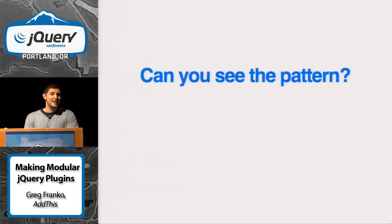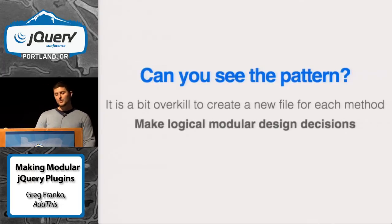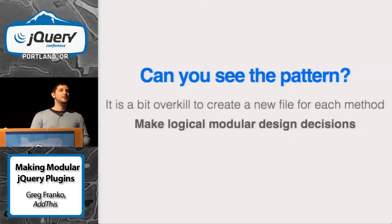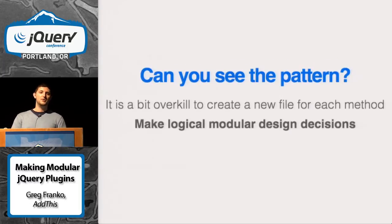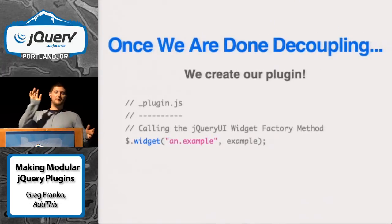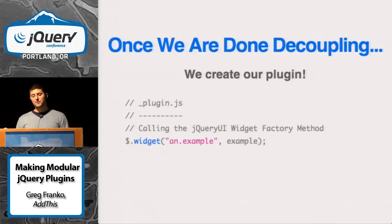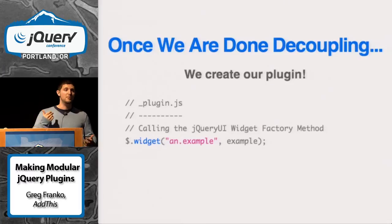You're seeing that I'm separating each bit of functionality into a separate file. In reality it's often overkill — you have to make your own modular decisions about maybe keeping a couple methods in one file, and deciding which files should be separated. Once you've decoupled the plugin and have your local example object, you can easily call the widget factory using dollar sign dot widget, passing the namespace, base name, and object literal — and boom, you have your jQuery plugin.